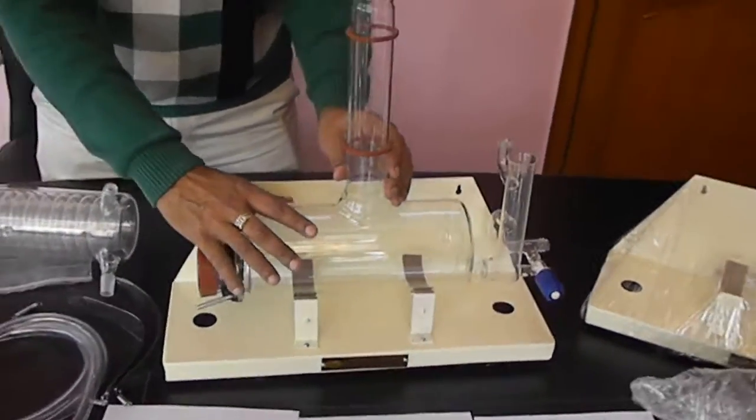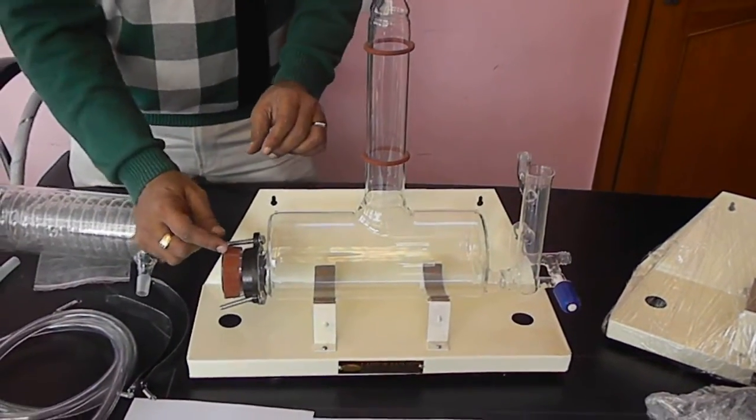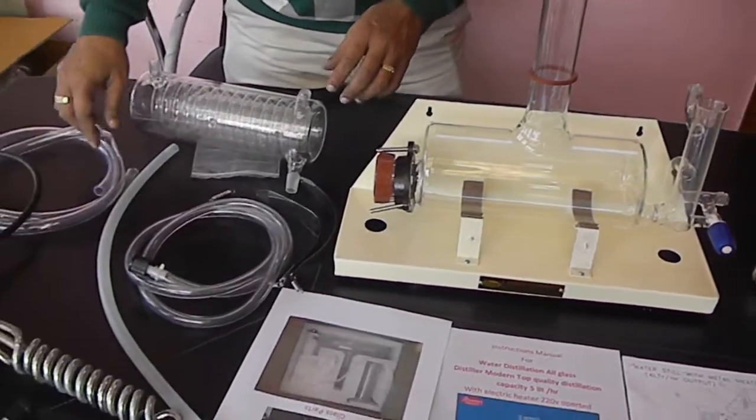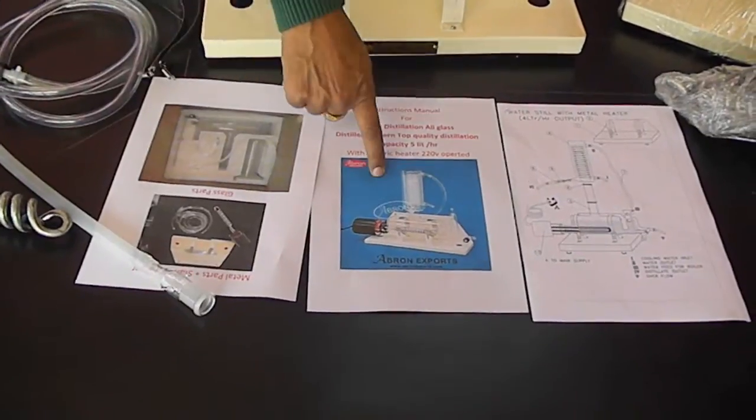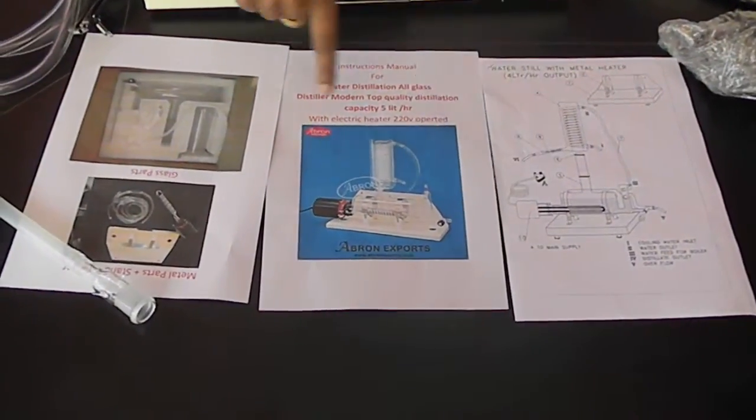It has a glass heating chamber, heater, adapter, rubber tubes, silicone tubes, and output. The manual is provided. This is the distillation after assembly and all these parts are labeled.